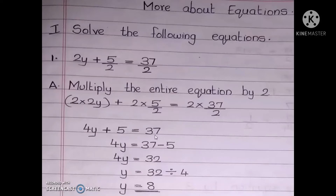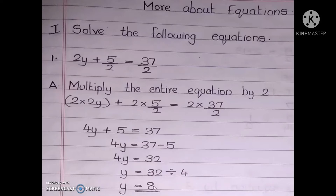Now using the transposing method, you will take plus 5 to the other side — that is minus 5. So 4y equal to 37 minus 5. 37 minus 5 is 32, so 4y equal to 32. 4 is multiplied here, so when you take it to the other side it becomes division. y is equal to 32 divided by 4, which is 8. So the solution for this equation is y equal to 8.